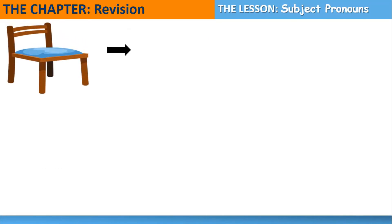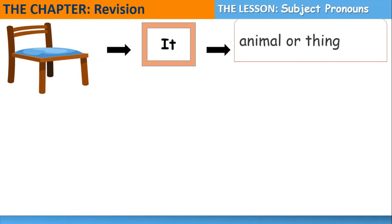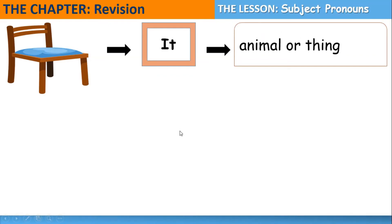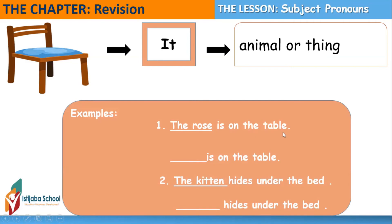This is a chair — it's a thing. 'It' is used to replace an animal or a thing. For example: 'The rose is a thing,' so we use the subject pronoun 'it' to replace 'the rose' — 'It is on the table.' Sentence number two: 'The kitten hides under the bed.' The kitten is an animal, so I use 'it' — 'It hides under the bed.'